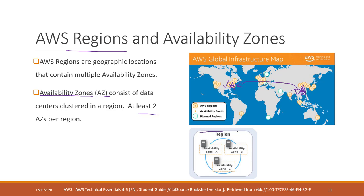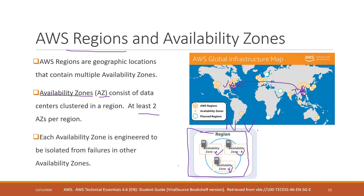Within each region there are at least two availability zones, or AZs. For example, in the Northern Virginia region we have three AZs: AZ-A, AZ-B, and AZ-C. Those AZs are located in different geographic places — for example, one might be in Harrisonburg, one in Richmond, and one in Shelbyville. No one knows the exact locations of those AZs. The reason we have multiple AZs is to have additional copies of your services and resources. For example, you might have a master database in Richmond and secondary databases in the others.